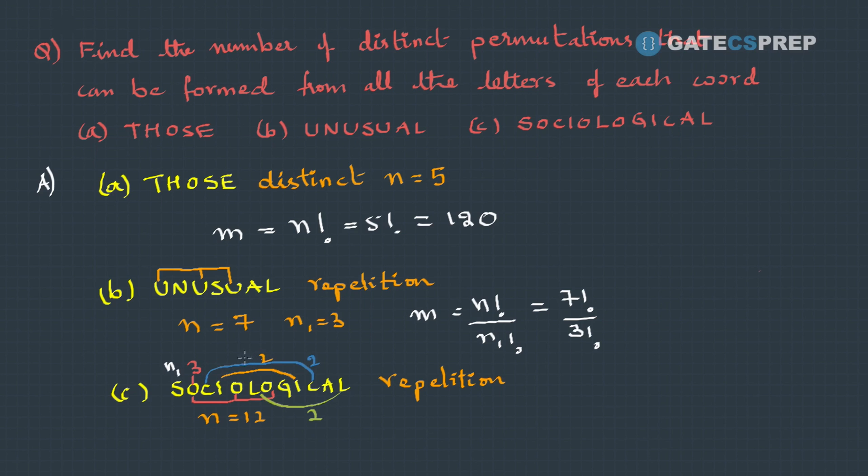This is n1, this is n2, this is n3 and this is n4. So the total number of permutations are n factorial divided by n1 factorial n2 then n3 then n4 factorial, which is 12 factorial divided by 3 factorial 2 factorial 2 factorial and 2 factorial. That's the answer.